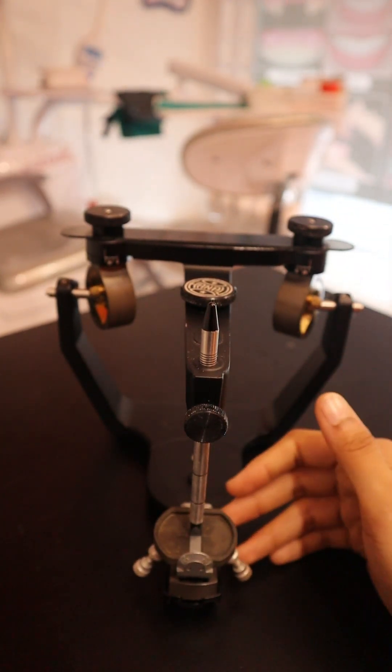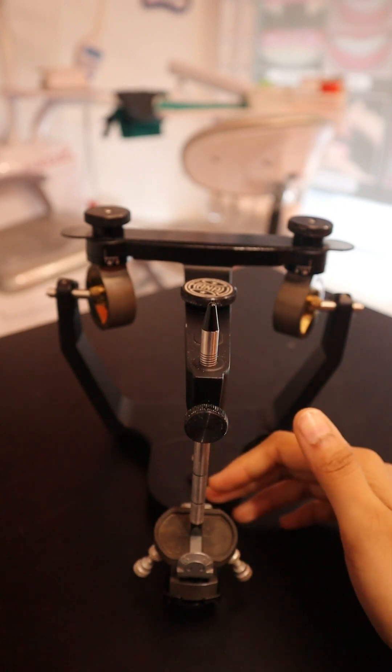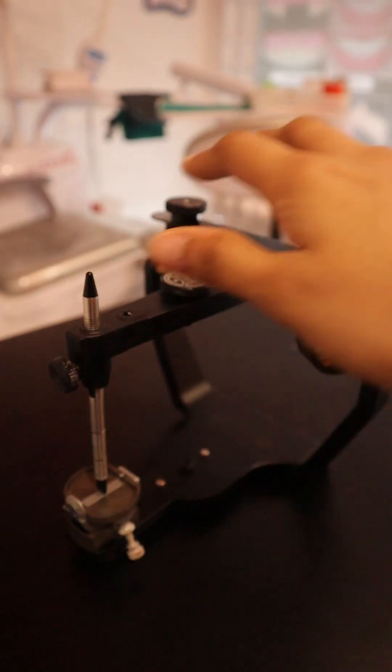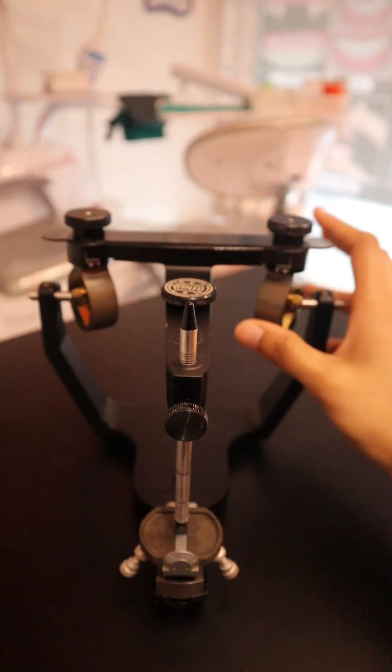It basically represents the patient's glenoid fossa and the portion of the cranium as the upper articulator member. The lower member functions as the condyle of the patient's mandible. Now let's go on to the basic parts of all the articulators.